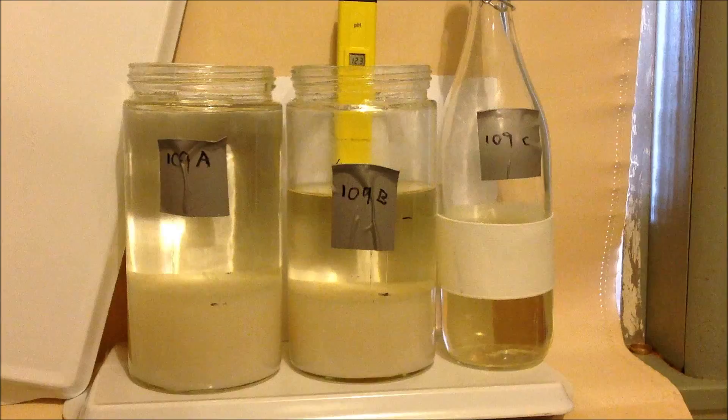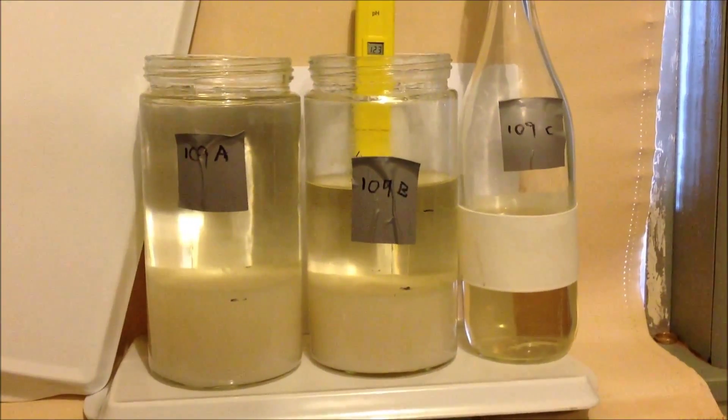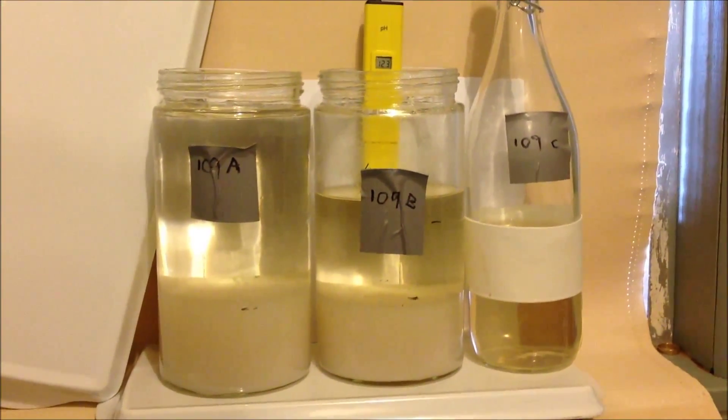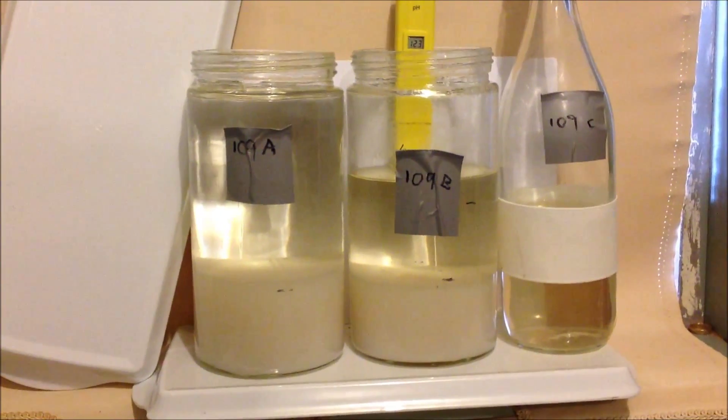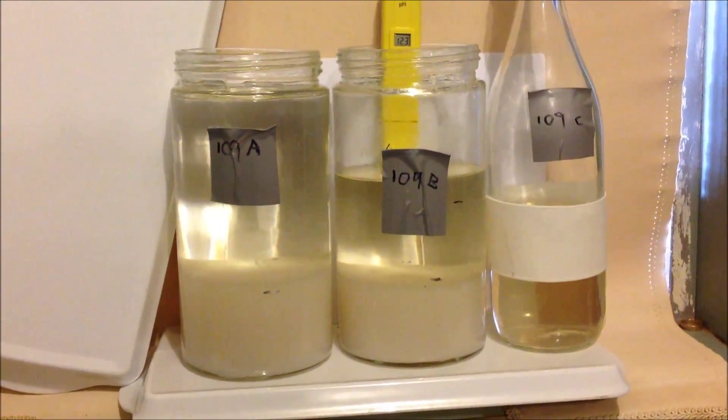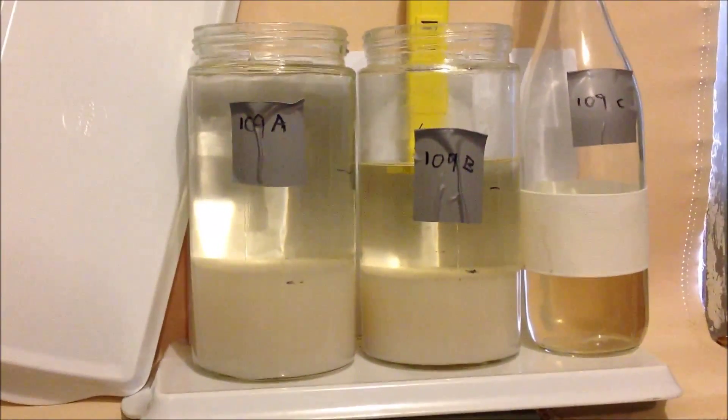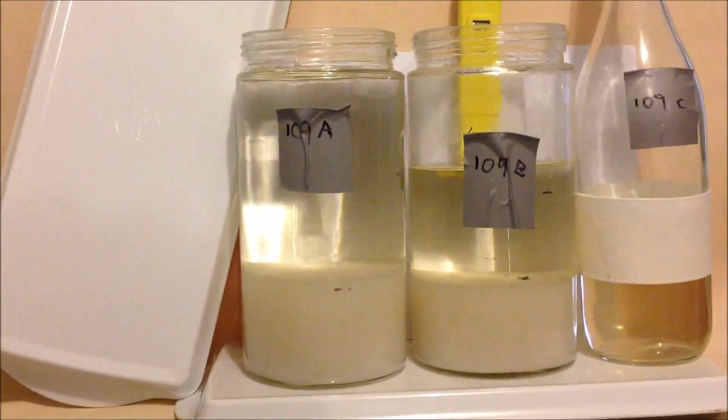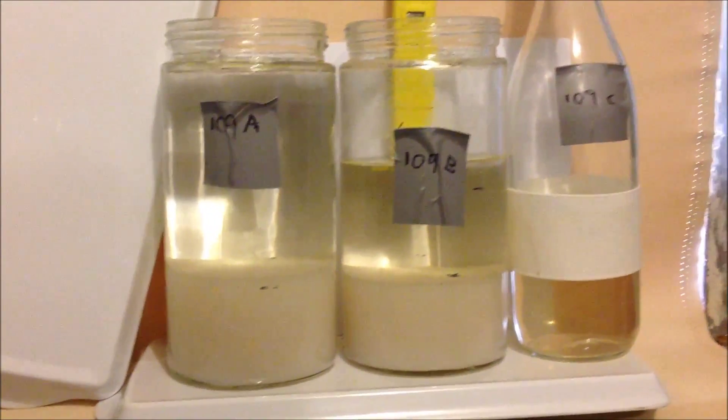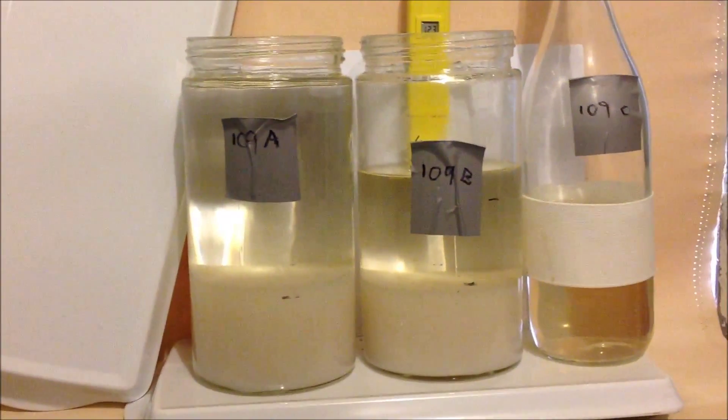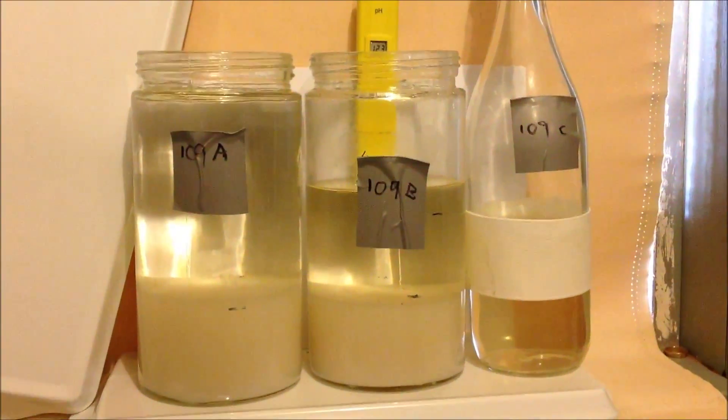After settling, the pH has crept up to 12.3 overnight. I'm pretty sure all the M-State would be out or in solution now, allowing the pH to go up. You can see the color in the liquid. It's a bit fainter in 109A, but that's more dilute. I was scared, but I'm hopeful I'll recover something.